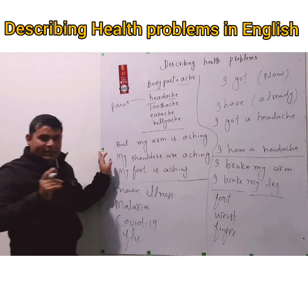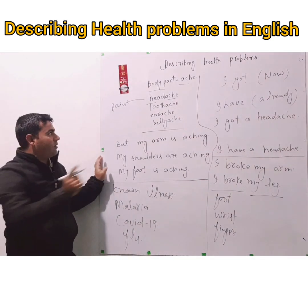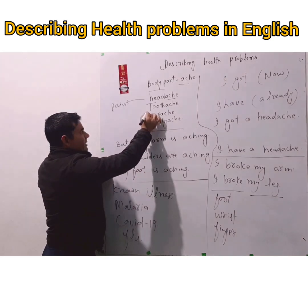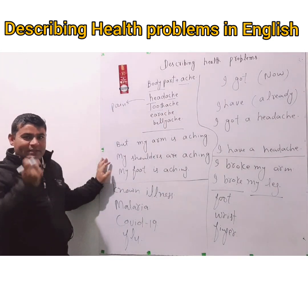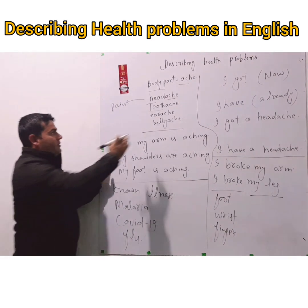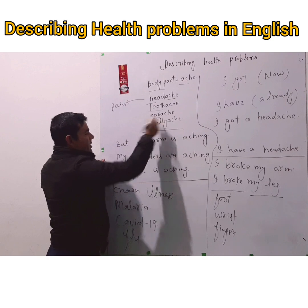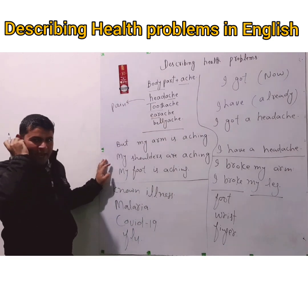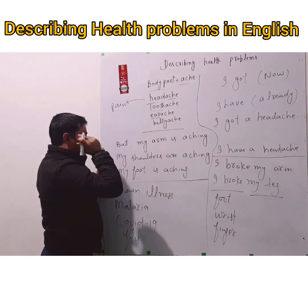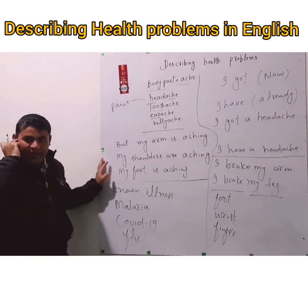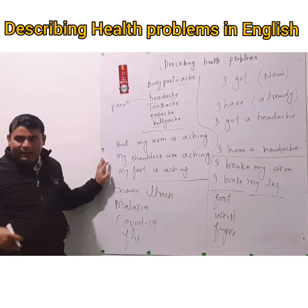'-Ache' can be used with certain body parts, not all of them. For example: toothache — you have pain in your tooth, so you say 'I have a toothache.' Earache — you have pain in your ear, so you say 'I have an earache.' Bellyache — you have pain in your belly, so you say 'I have a bellyache.'